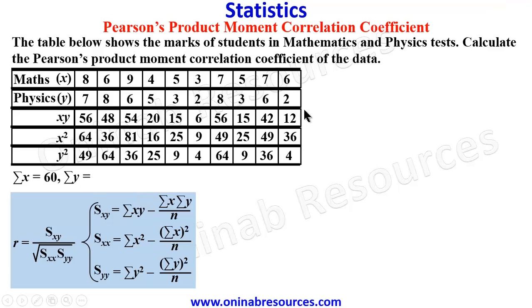So for Sigma Y, we are summing up all the Y's. That is the scores for physics. This is summed up to give us 50.